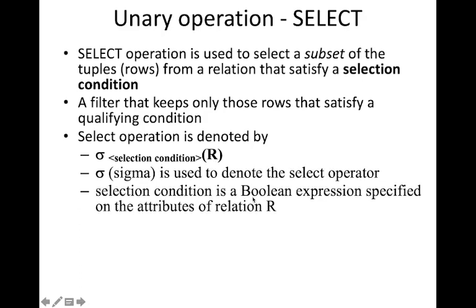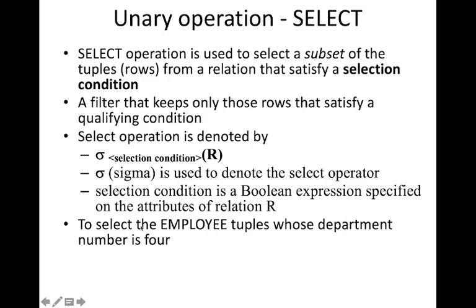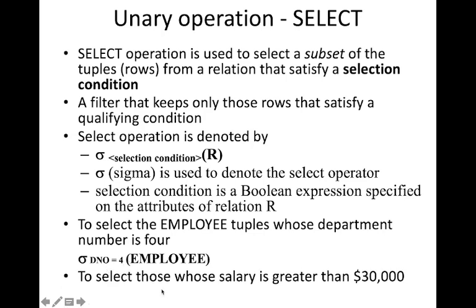The select operation is denoted using the symbol sigma. We specify the selection condition followed by the table or relation name. Sigma is used to denote the selection operator and the selection condition is a boolean expression — it can be equal to, less than, AND, or any boolean expression. For example, to select employee tuples whose department number is four: sigma(d_number = 4)(employee).